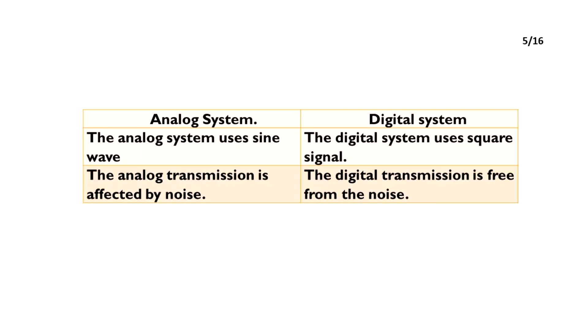The analog system uses a sine wave. The digital system uses a square signal. The analog transmission is affected by noise. The digital transmission is free from noise.